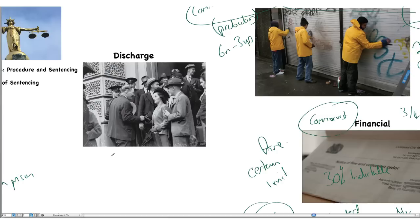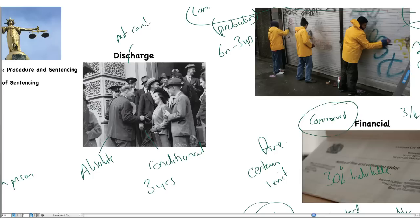Finally, looking at types of sentence, there is the discharge. There are two types: an absolute discharge and a conditional discharge, which may be for up to three years. A discharge will be granted if the court thinks that punishment is unnecessary. Importantly, it does not count as a conviction for most purposes, unless the defendant wishes to appeal against it.